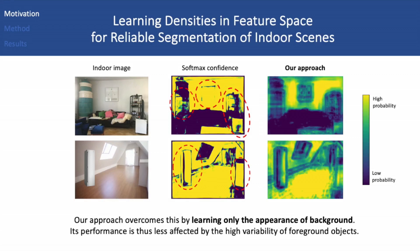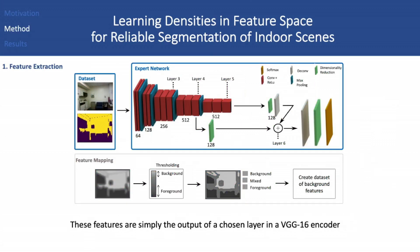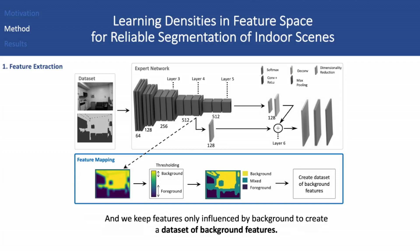Our approach overcomes this by learning only the appearance of background; its performance is thus less affected by the high variability of foreground objects. To do so, we first generate features from the background of indoor images. These features are simply the output of a chosen layer in a VGG16 encoder. We look at the feature's receptive field to determine if they were influenced by the background, the foreground, or both.